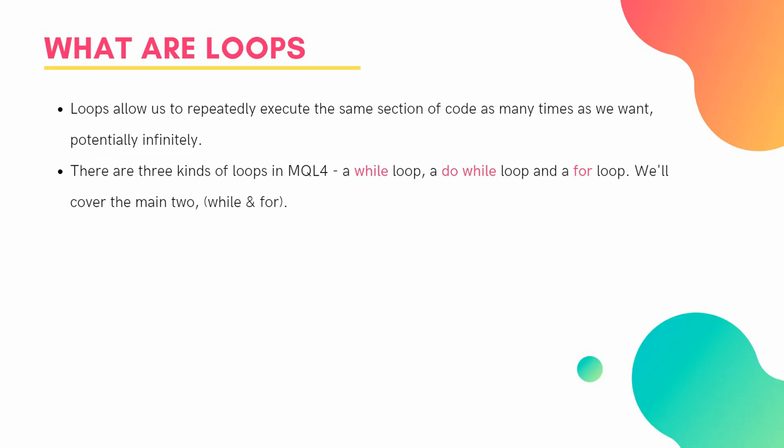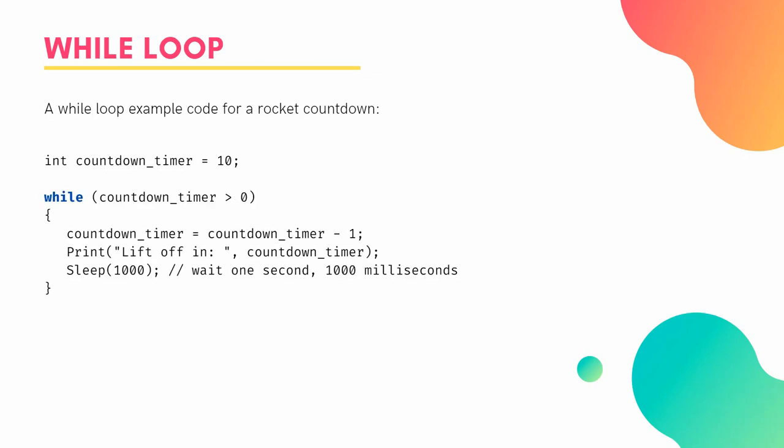We're going to cover the main two types: while and for. If you want to look at do-while loops, check the MQL4 documentation — I'll put a link in the description below. You can pretty much do anything you need in MQL4 with those two. We're going to look at a non-trading example: coding a rocket countdown timer using a while loop.